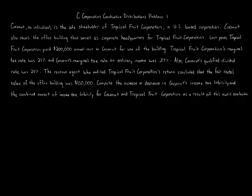C Corporation Constructive Distributions Problem 1. Coconut, an individual, is the sole shareholder of Tropical Fruit Corporation, a U.S.-based corporation. Coconut also owns the office building that serves as corporate headquarters. Last year, Tropical Fruit Corporation paid $200,000 annual rent to Coconut. The corporation's marginal tax rate was 21%, Coconut's marginal tax rate on ordinary income was 37%, and Coconut's qualified dividend rate was 20%. The revenue agent concluded the fair rental value was $150,000. Compute the increase or decrease in Coconut's income tax liability and the combined income tax liability for Coconut and Tropical Fruit Corporation.